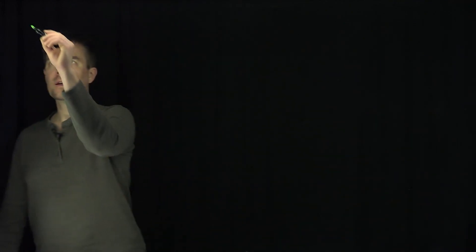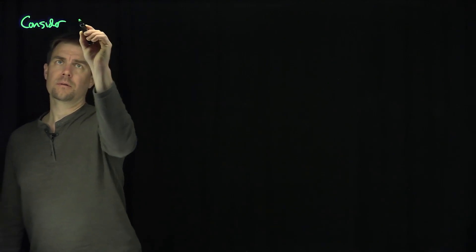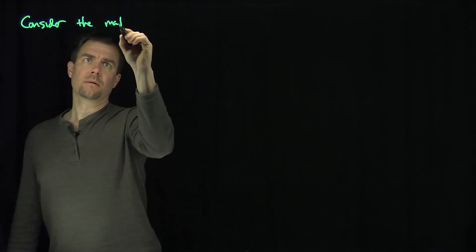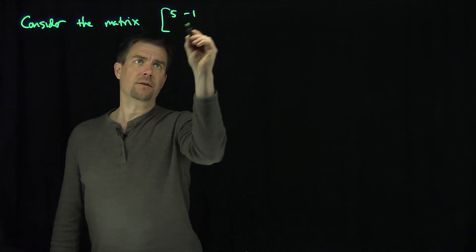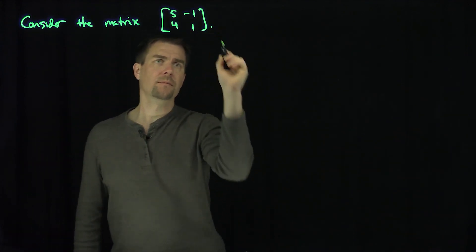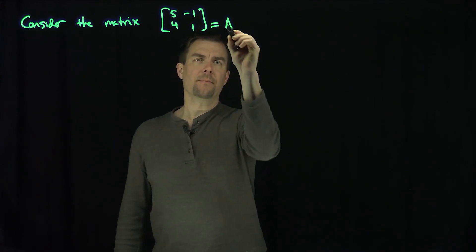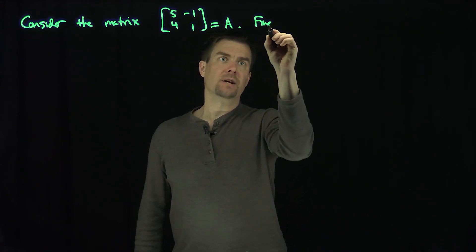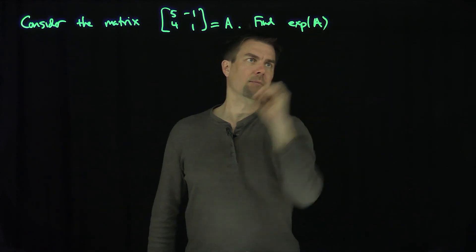Hello, students. In this video, we'll see an example of how to exponentiate a 2x2 matrix with a repeated eigenvalue. Let's consider the matrix A = [[5, -1], [4, 1]]. Let's find the exponential of this matrix A.